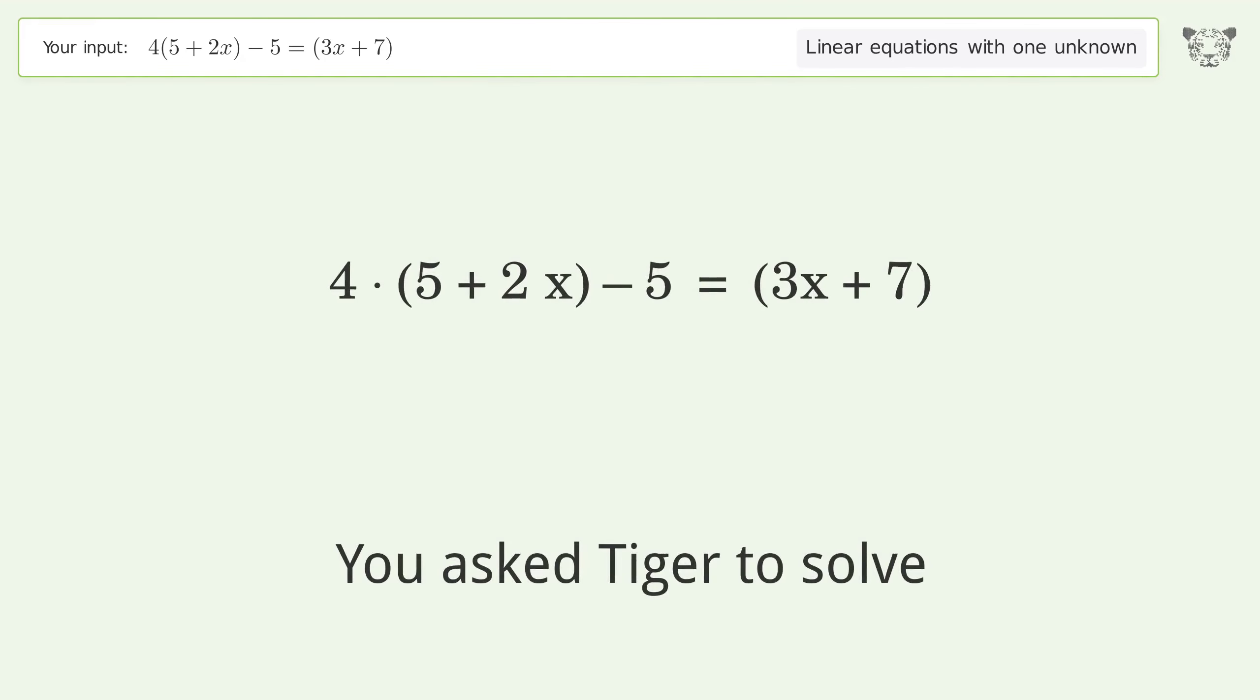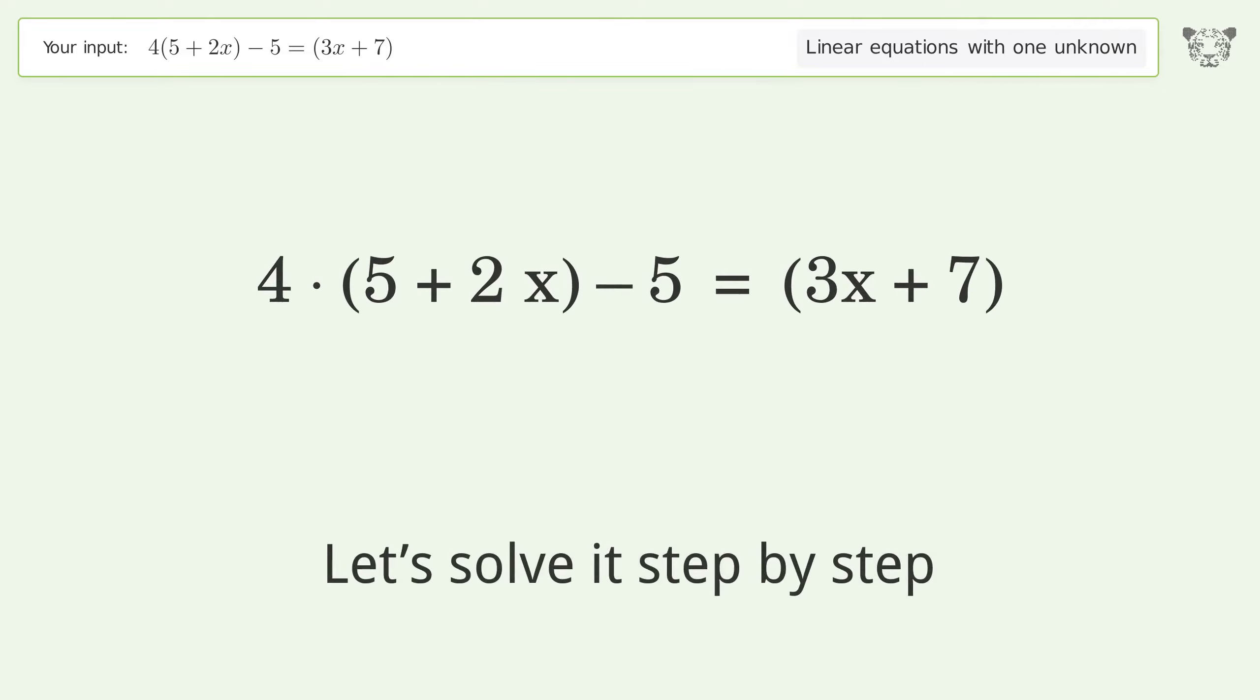You asked Tiger to solve this. This deals with linear equations with one unknown. The final result is x equals negative 8 over 5. Let's solve it step by step.